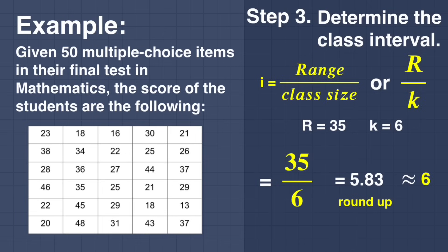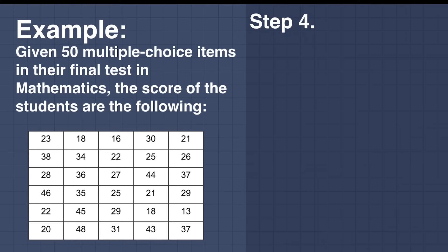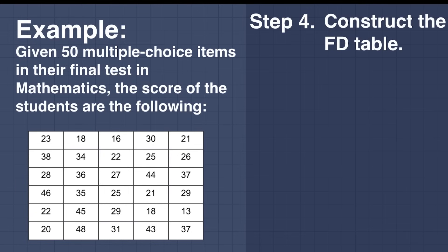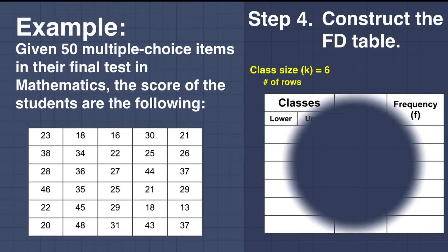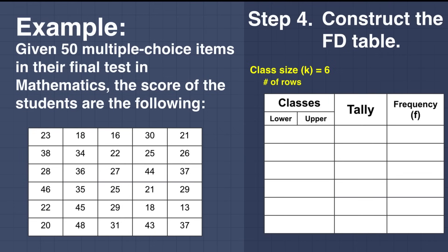Step number 4: Construct the frequency distribution table. Since the class size K is equal to 6, it signifies the number of rows. To complete the table, first get the lowest value, which is 13. Then for each row, add the interval. The class interval is 6, so 13 plus 6 equals 19.